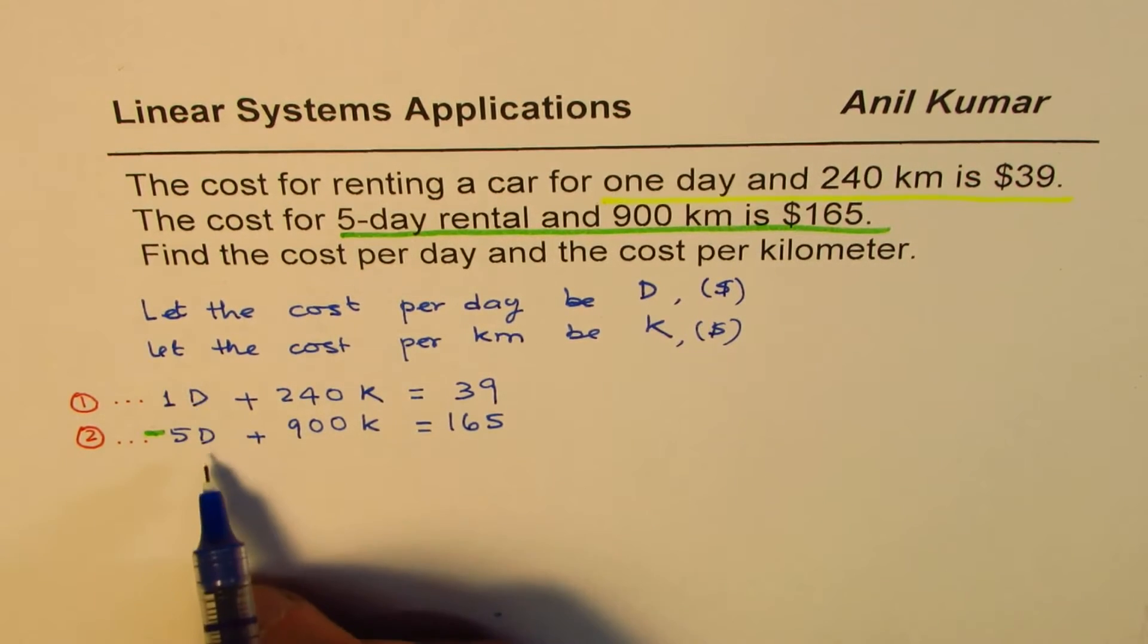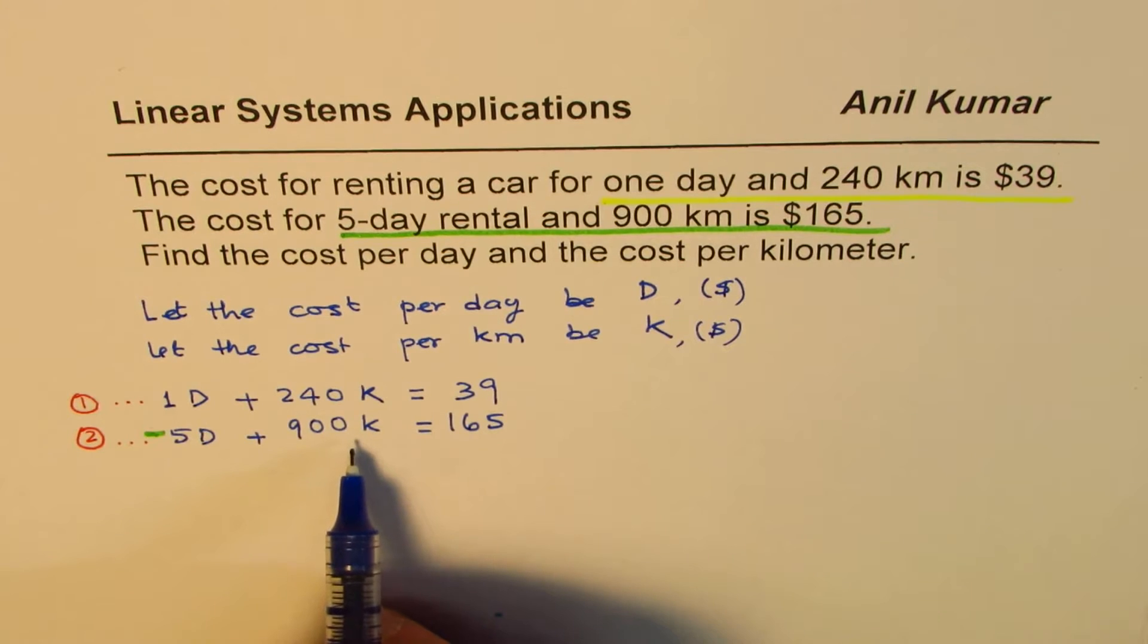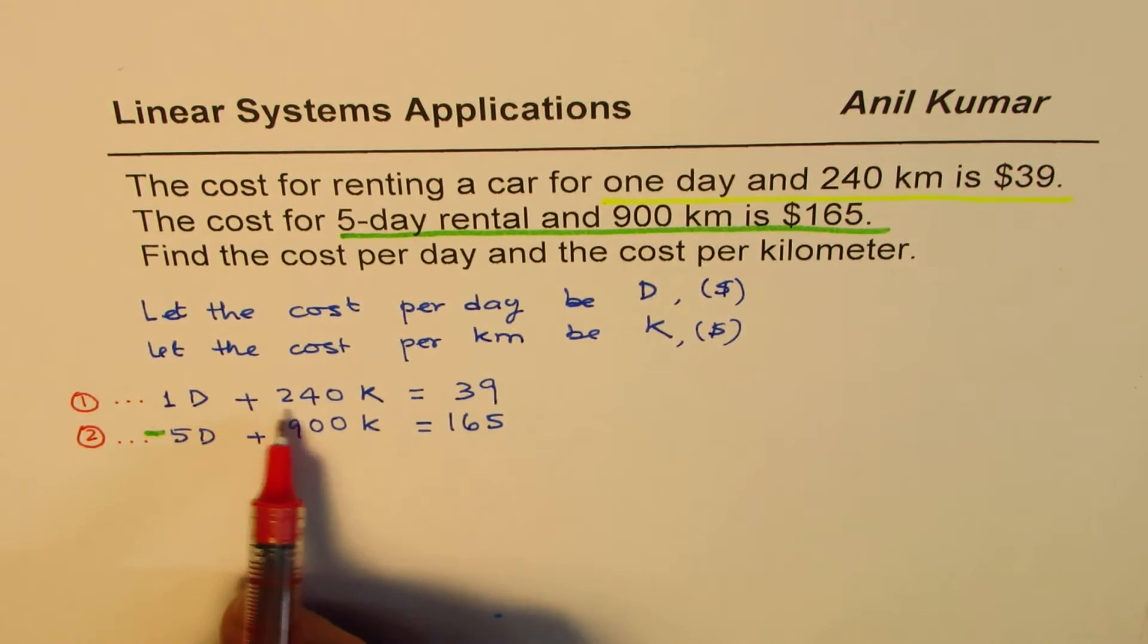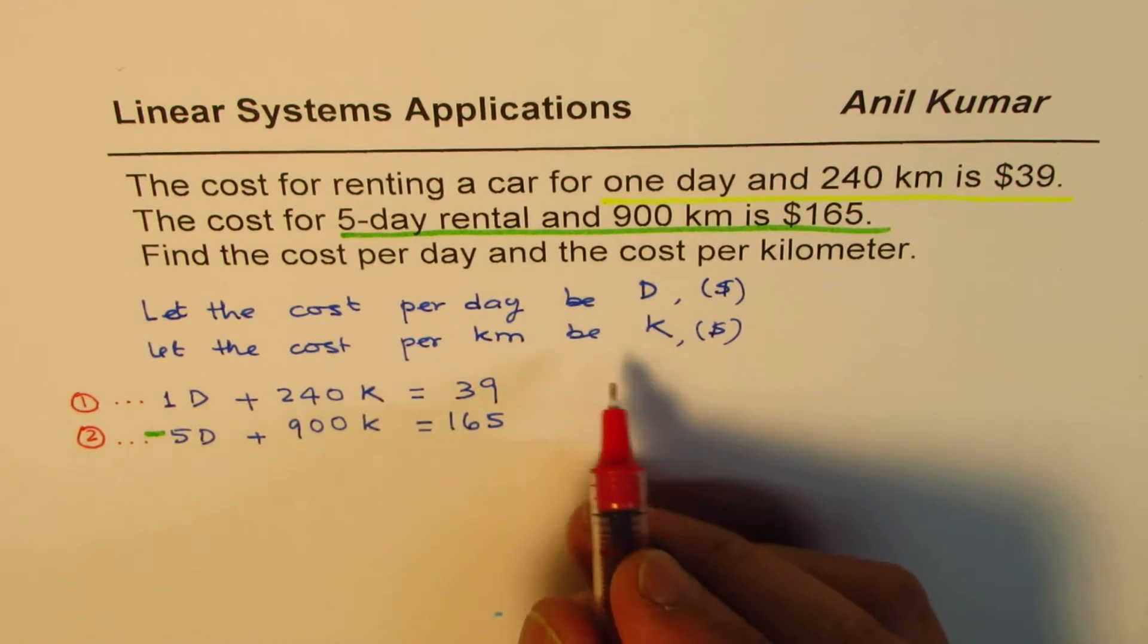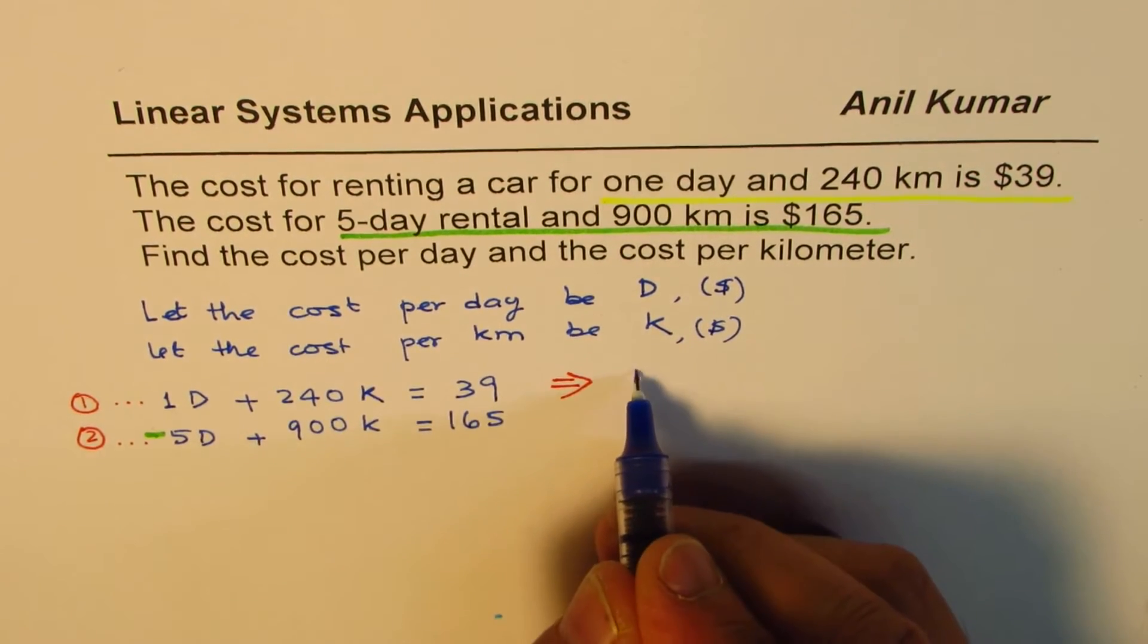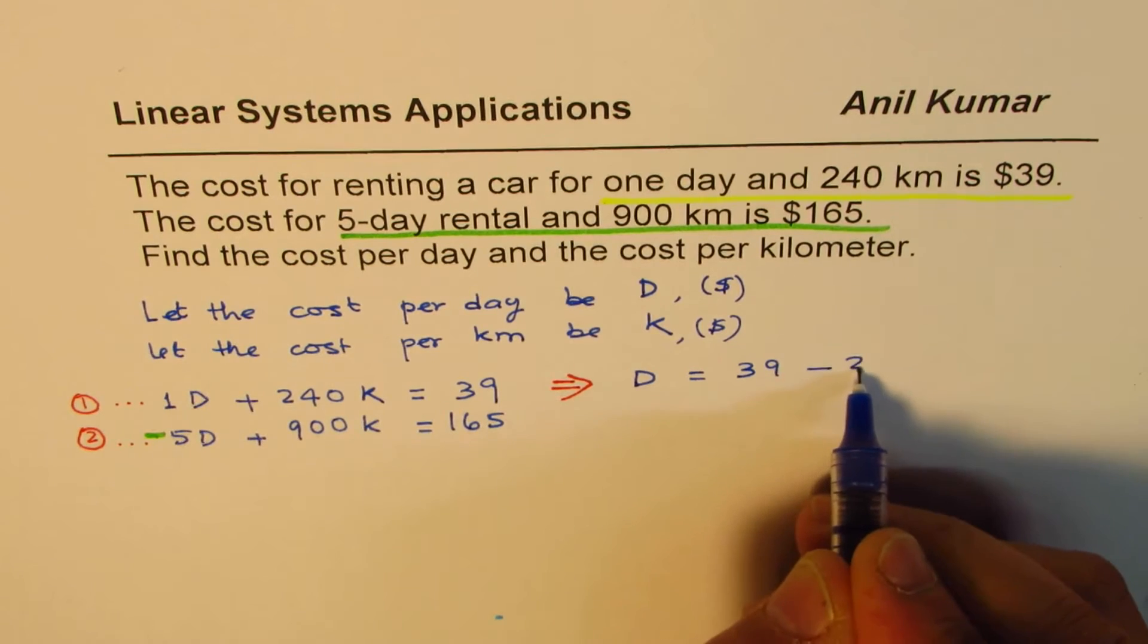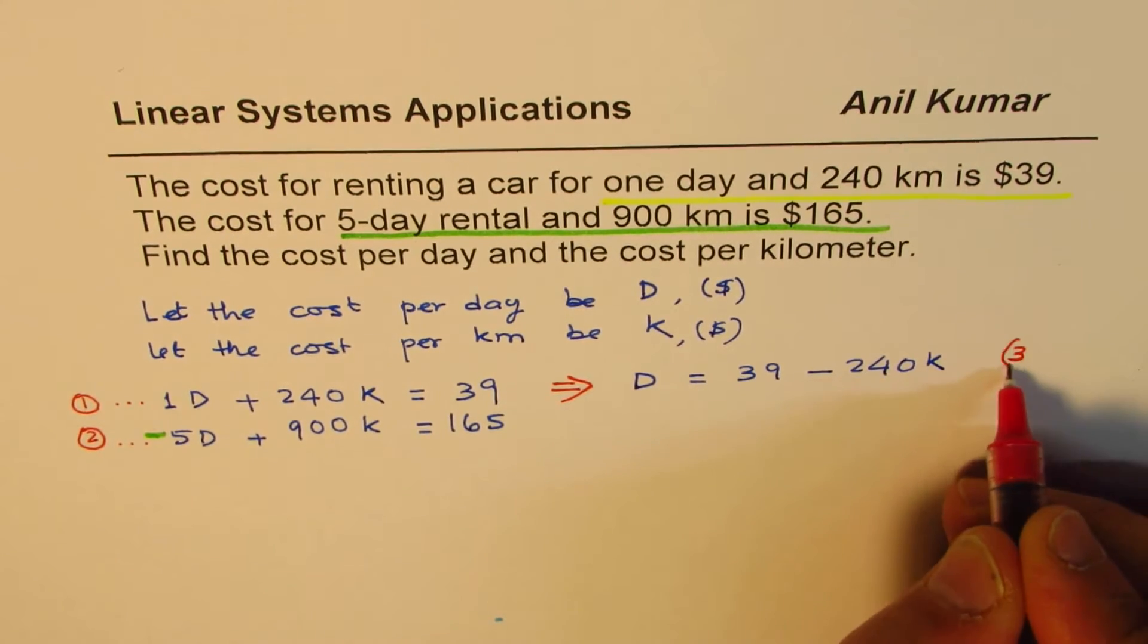Now, the idea is we have two different equations, two variables, that forms a linear system. We can solve them by substitution or elimination. In this particular case, since we have 1D plus 240K, we could always write what D is in terms of K from equation number one. I'm rewriting this equation in the form D equals to 39 take away 240K. We have one equation which relates the two variables. I'll call this as equation number three.